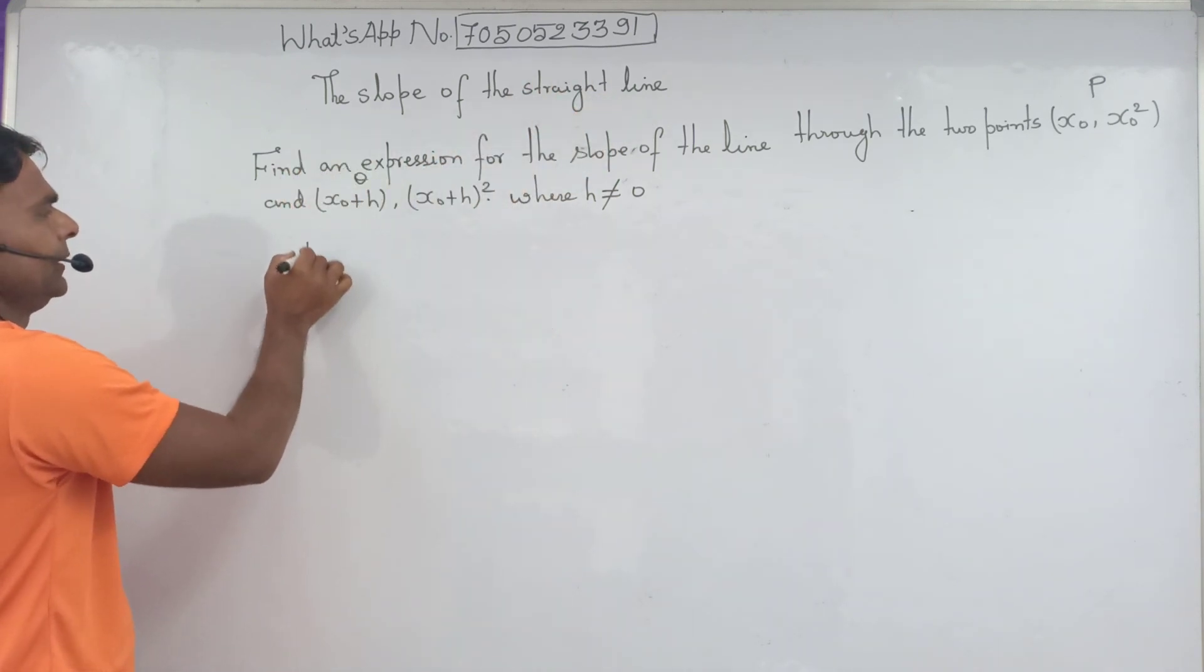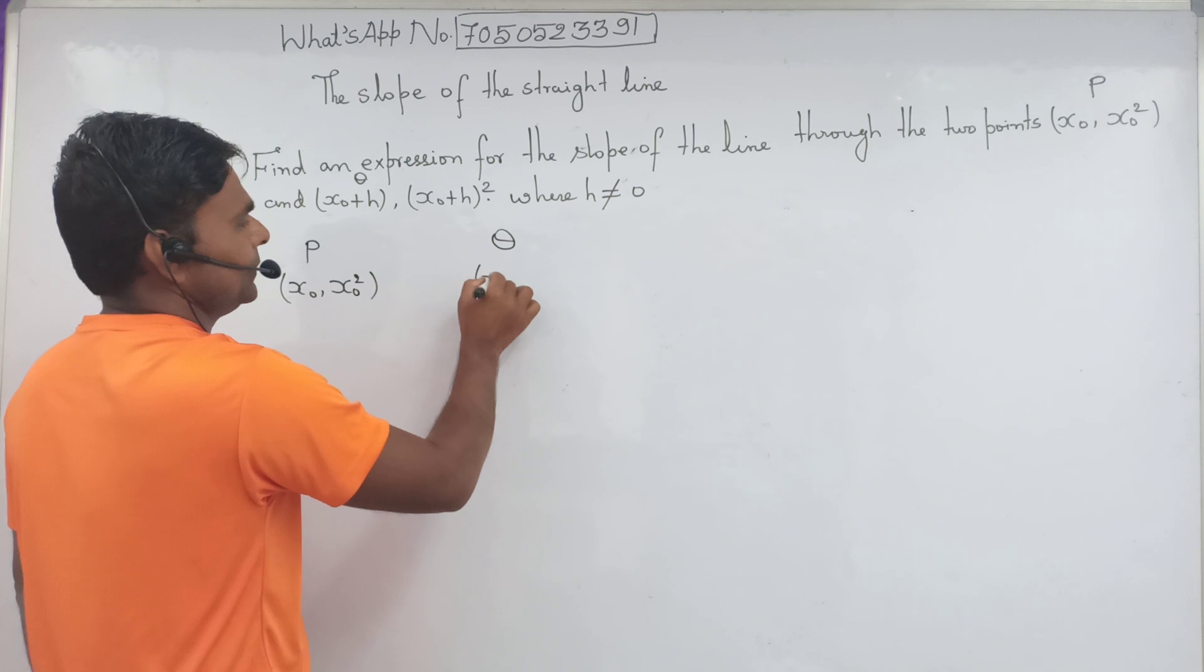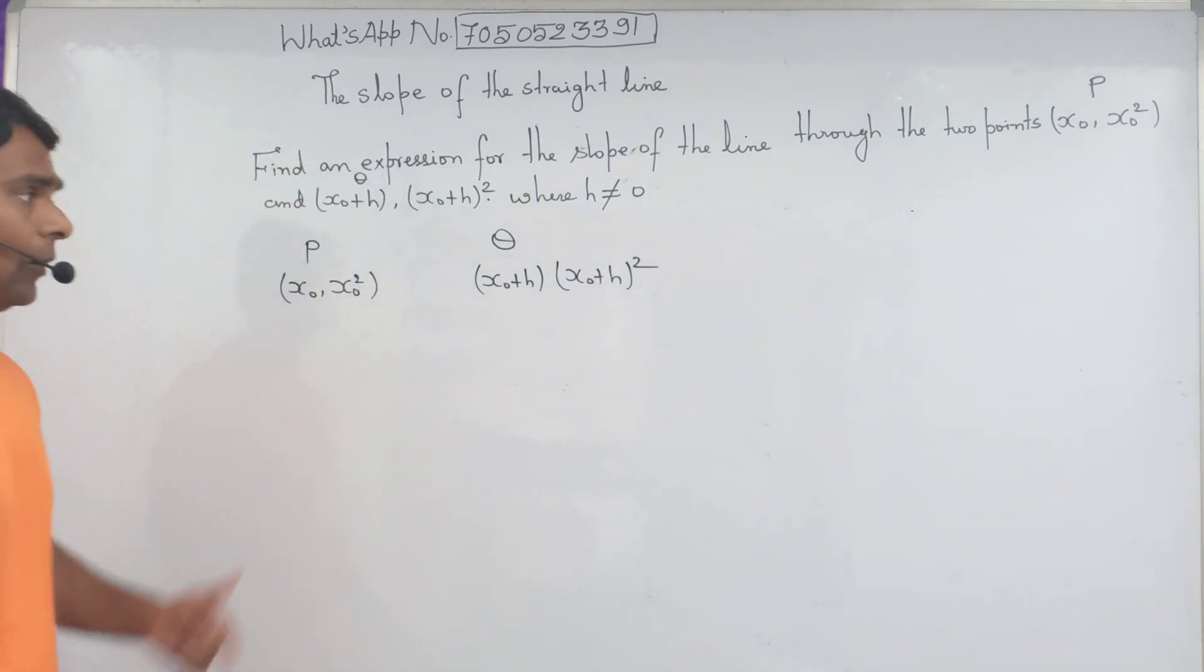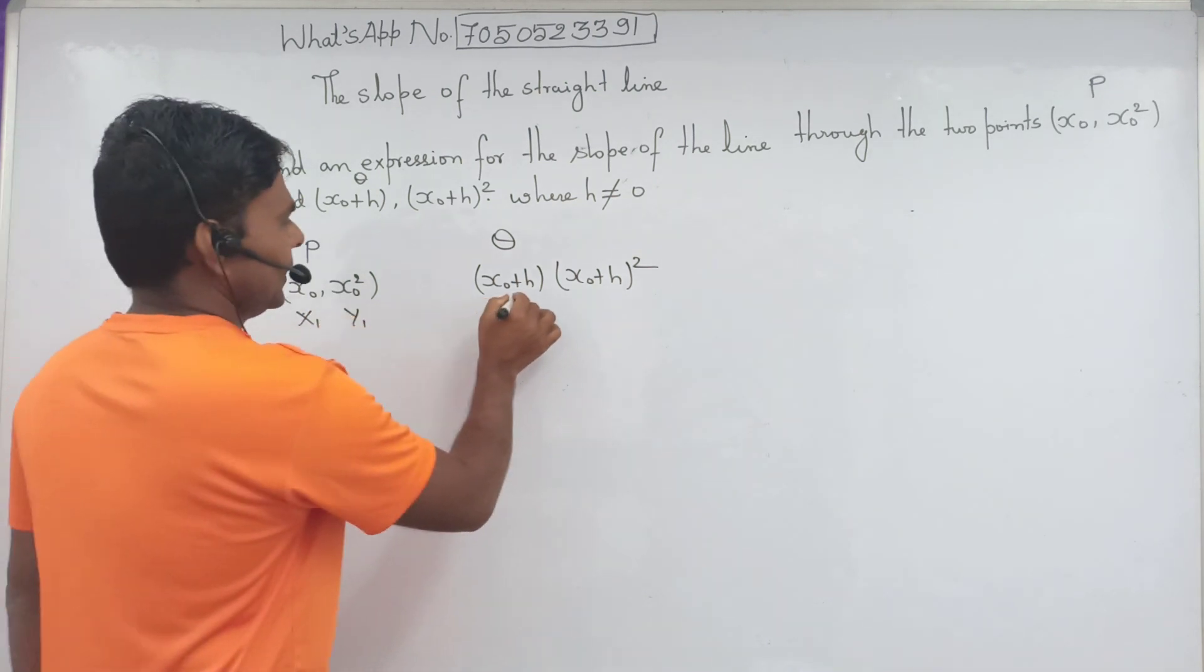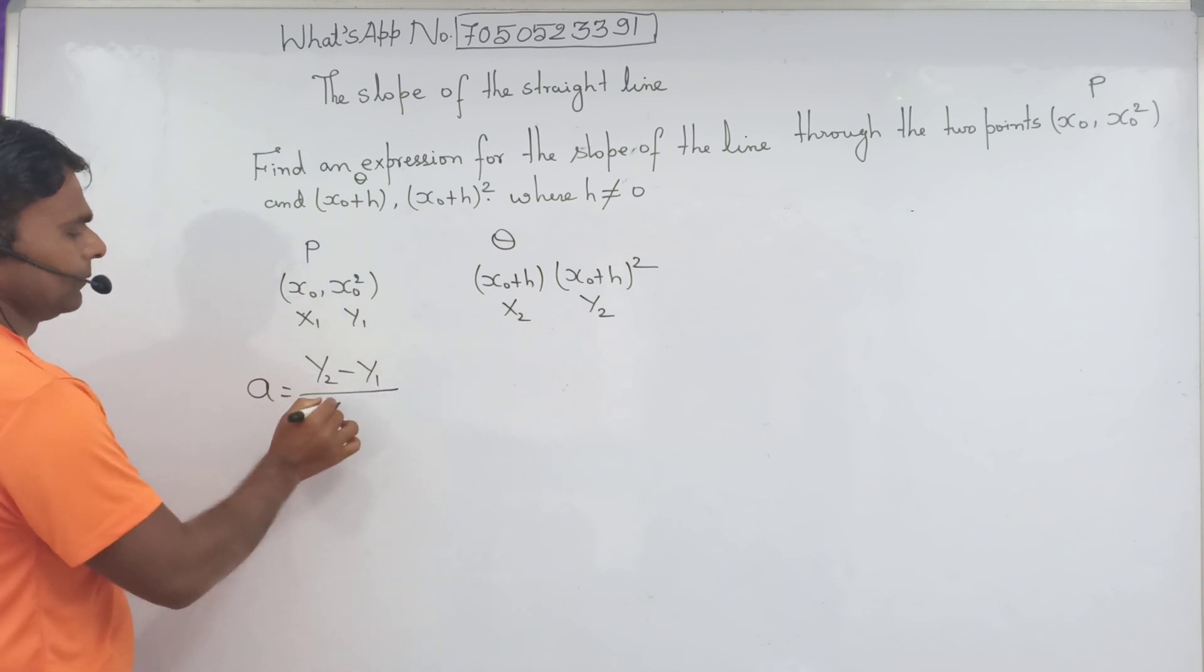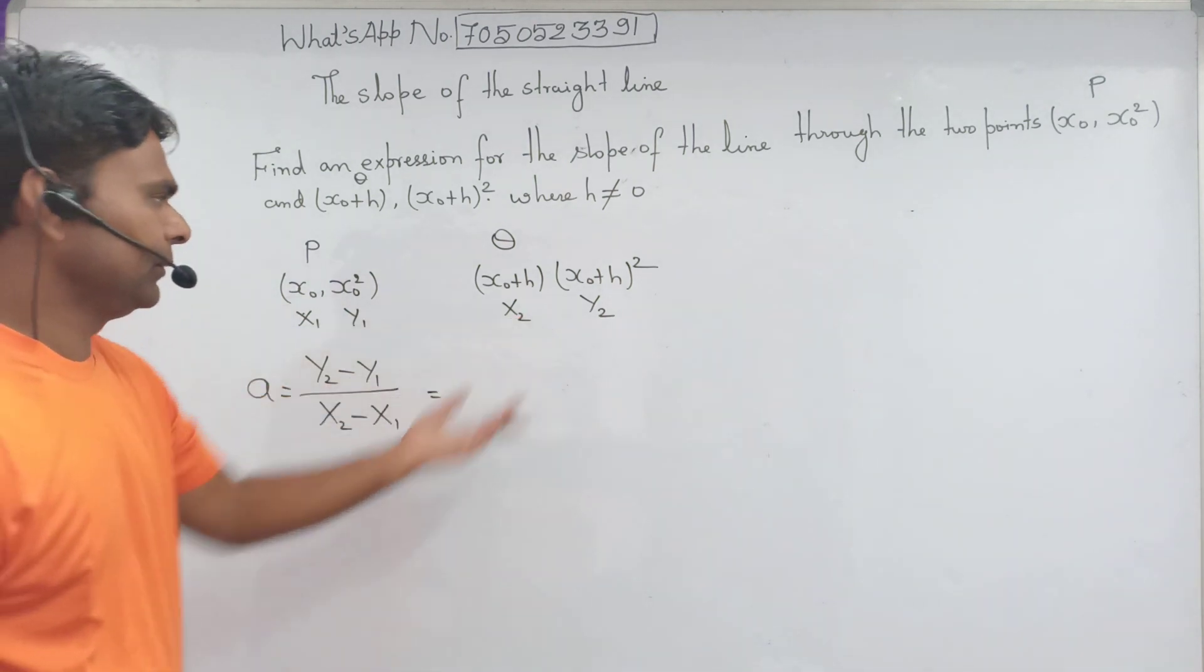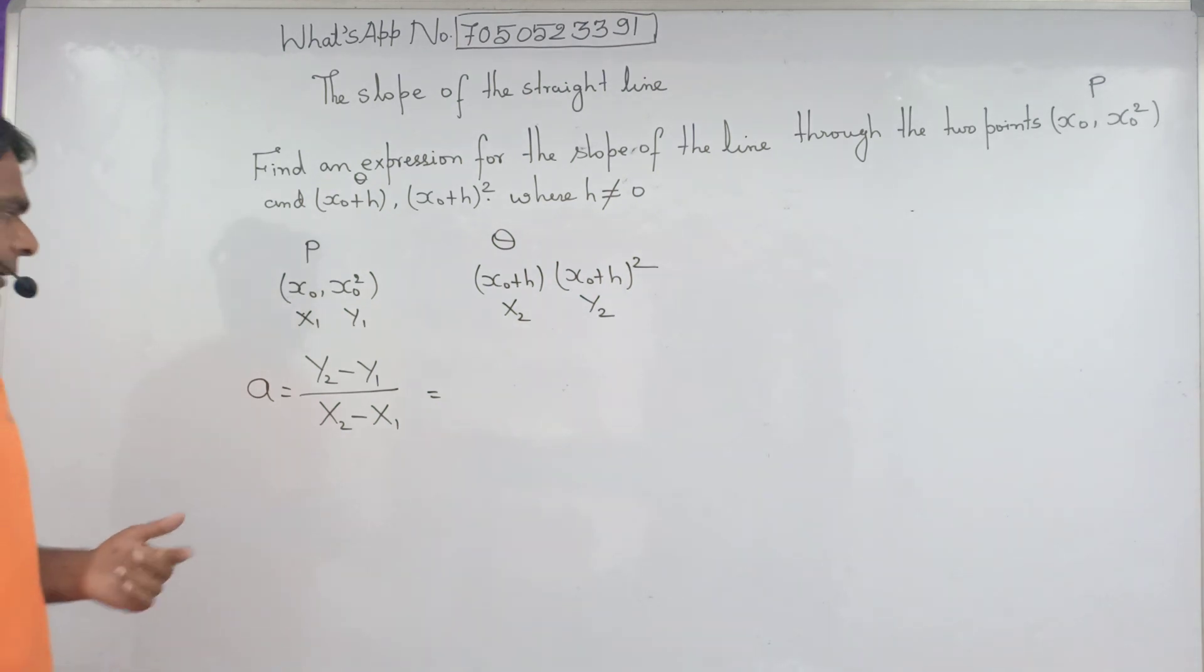First of all, we have to identify: x0, x0 square, and the second point is x0 plus h, x0 plus h of all square. This is x1, y1, x2, y2. And slope of a straight line equal to A equal to y2 minus y1 by x2 minus x1. What is the value of y2, y1, x1, x2? Just we need to substitute all value in this formula.